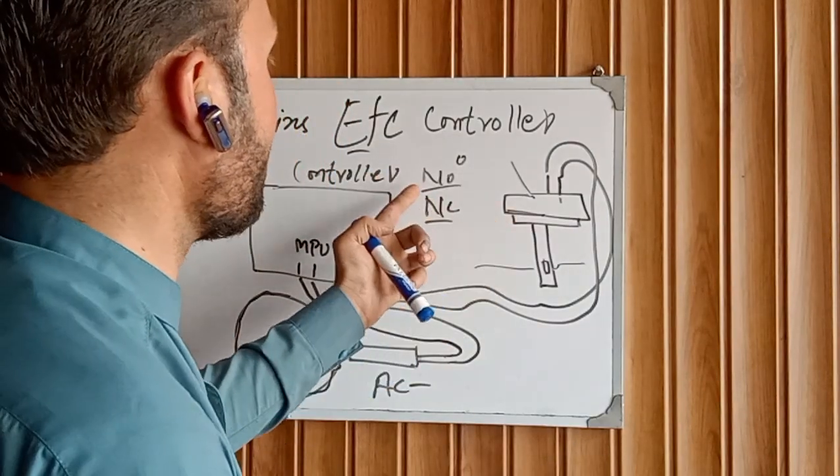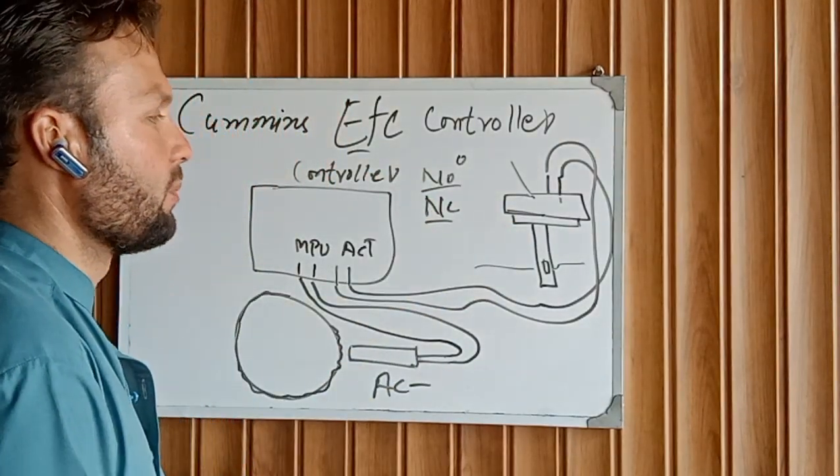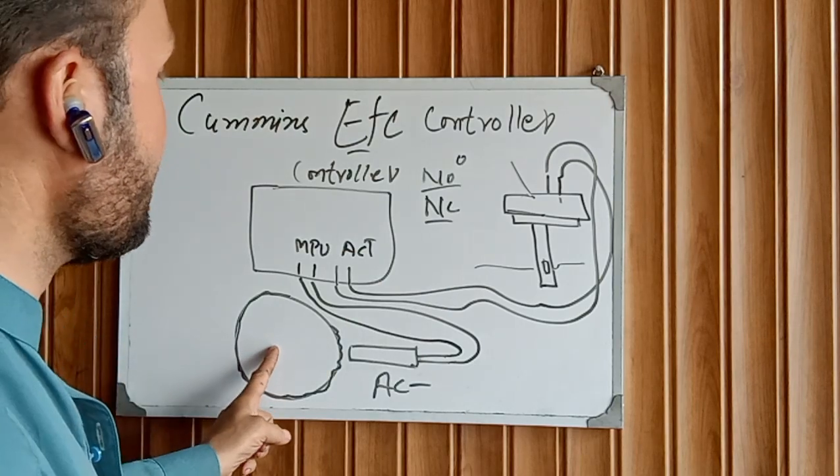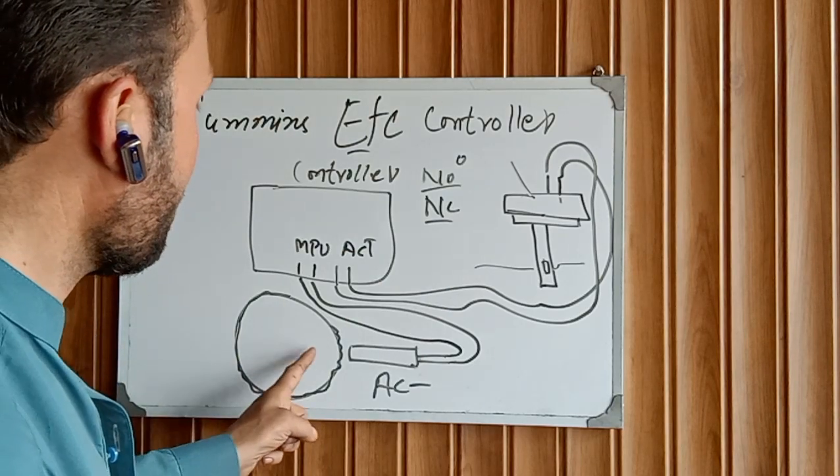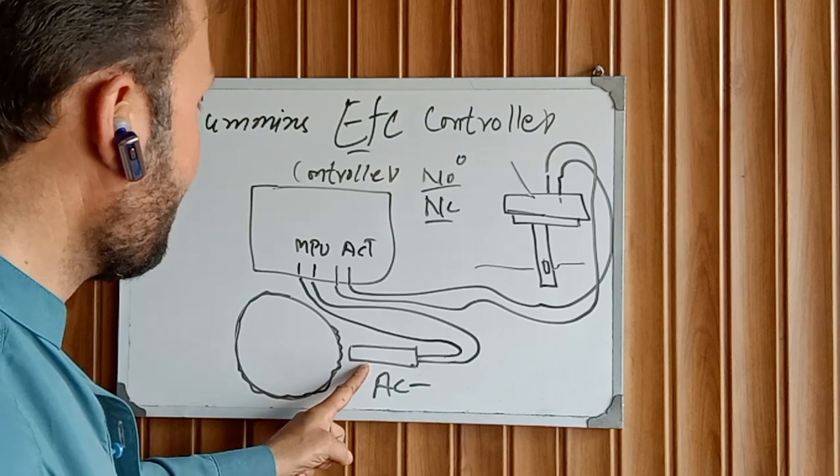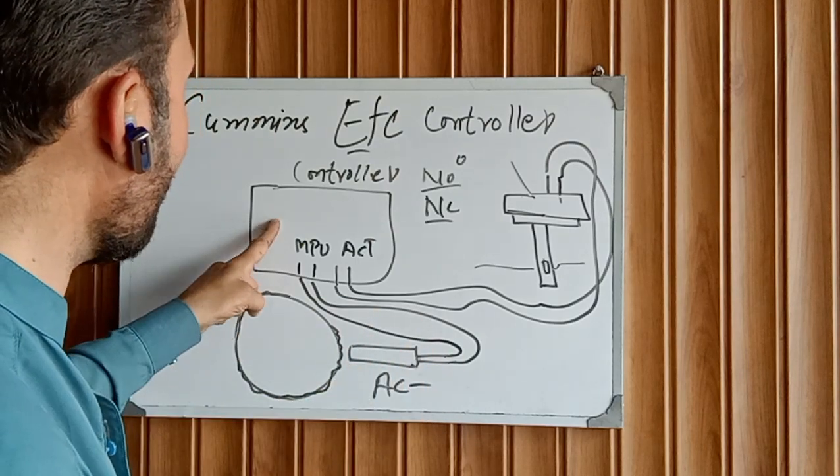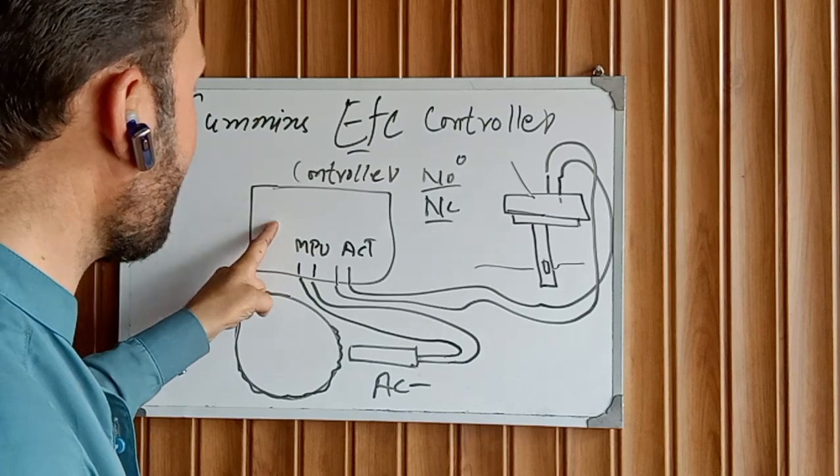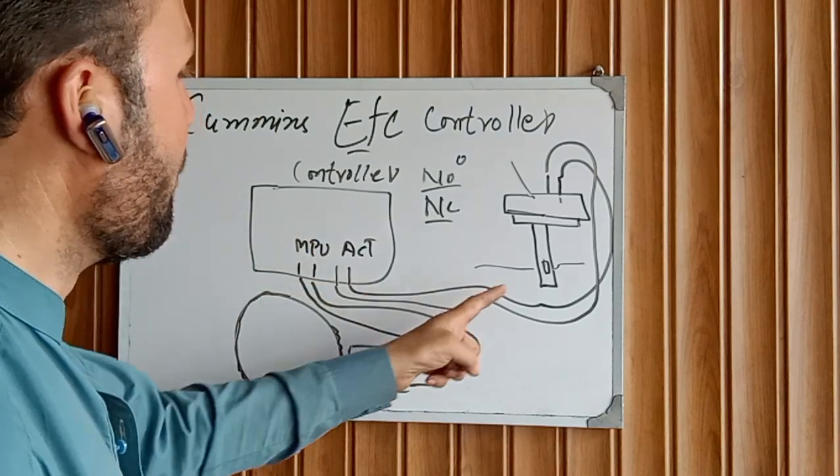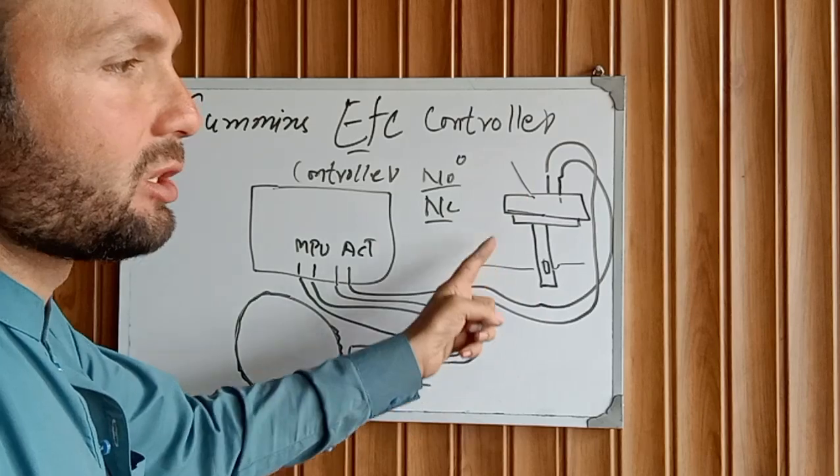But the working of this sensor is: the flywheel is rotating and it generates AC voltage and gives it back to the controller card. And the controller card then sends it back to the actuator, and the actuator is working.